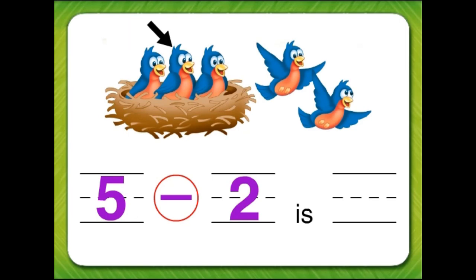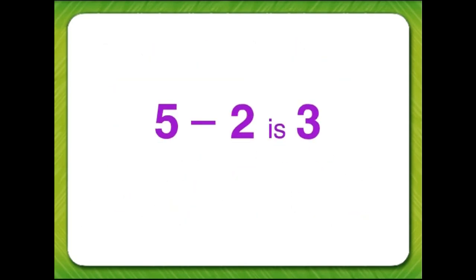One, two, three. Three birds are still in the nest. So, five minus two is three.